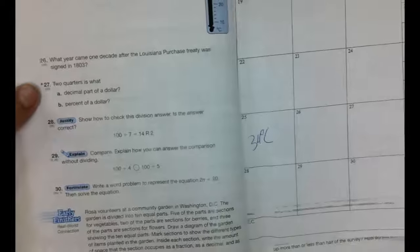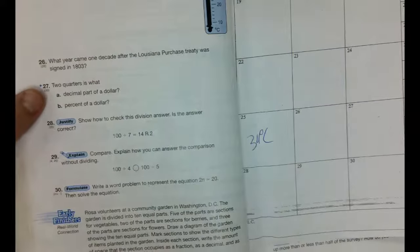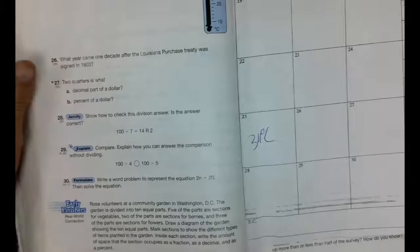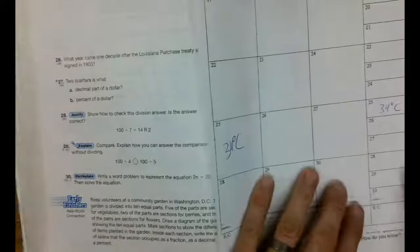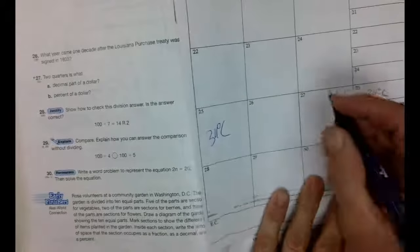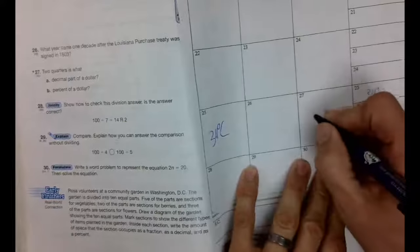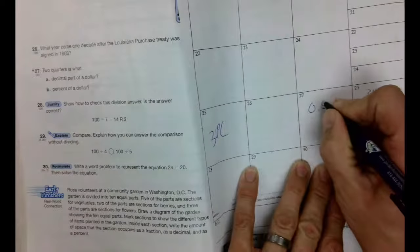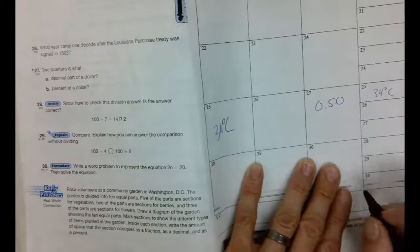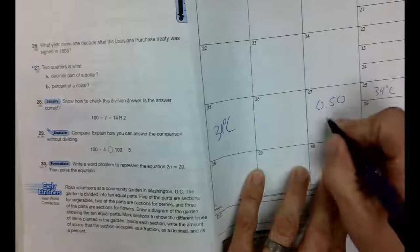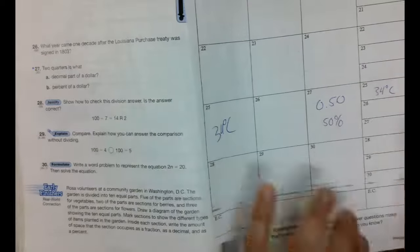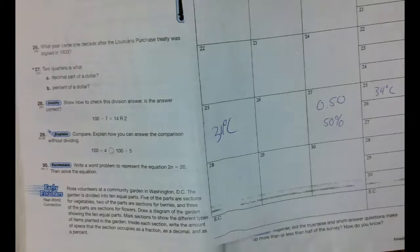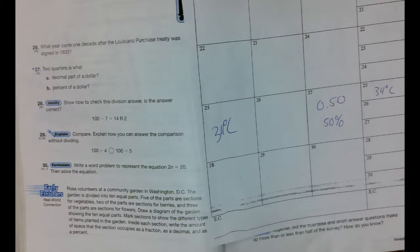Number 27 comes from today's lesson. It says two quarters is what decimal part of a dollar? So two quarters is 50 cents. So it would be written like what? Decimals are written 0.50. And what's the percent of it? And I'm going to teach you in today's lesson how to use your folder. One half, 50 cents, 50 percent.